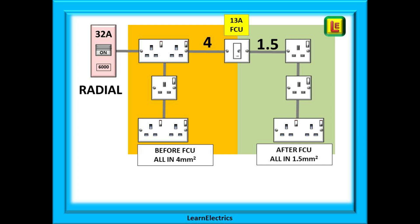And the arrangements of sockets can be as you wish, spurs on spurs and so on as before. The same rules apply to a 20 amp radial circuit. Everything before the 13 amp FCU should be 2.5 mm and everything afterwards can be 1.5 mm.